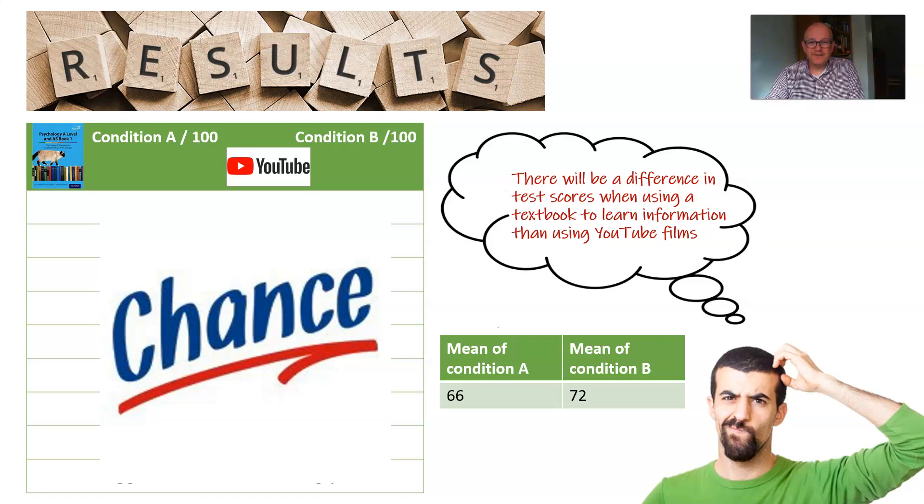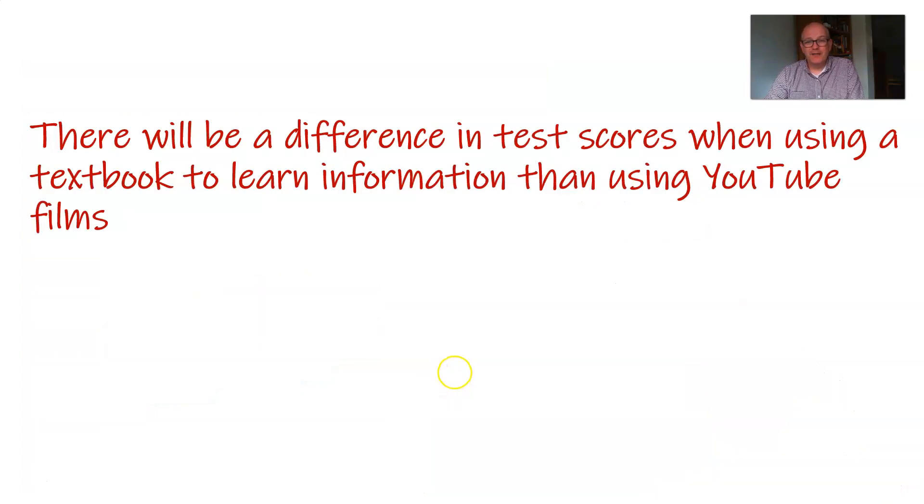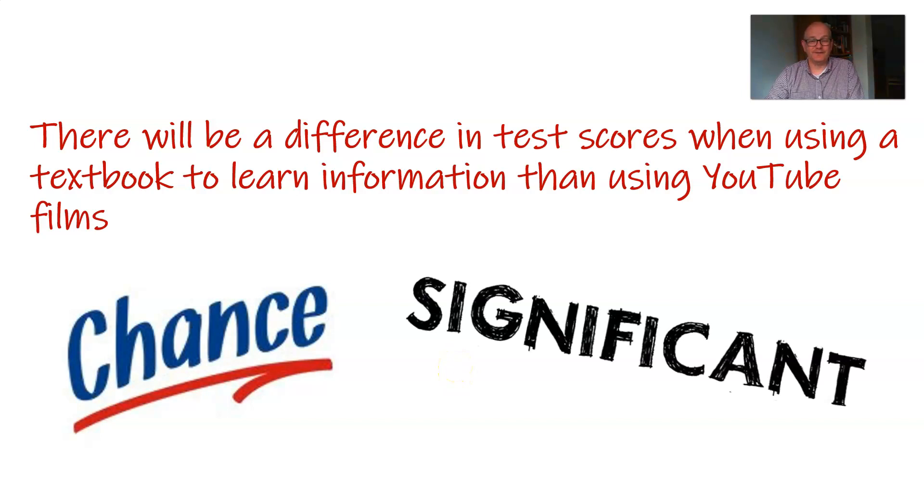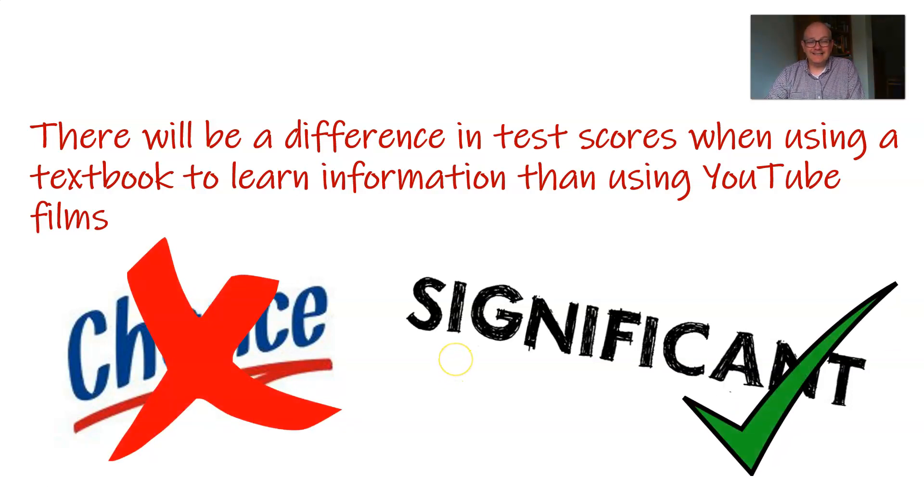My hypothesis says that there will be a difference. The problem is there is always a difference in a difference study and there will always be some form of relationship in a correlational study. The question is, is the difference big enough that I can make a firm conclusion, or did it just happen by chance? So with my hypothesis, I've got a problem here because I might have a difference by chance or there could be a significant difference. Now, as a good scientist knows, you can't just let chance happenings support your hypothesis. You really need to be quite certain. So I don't need chance, I need significance.